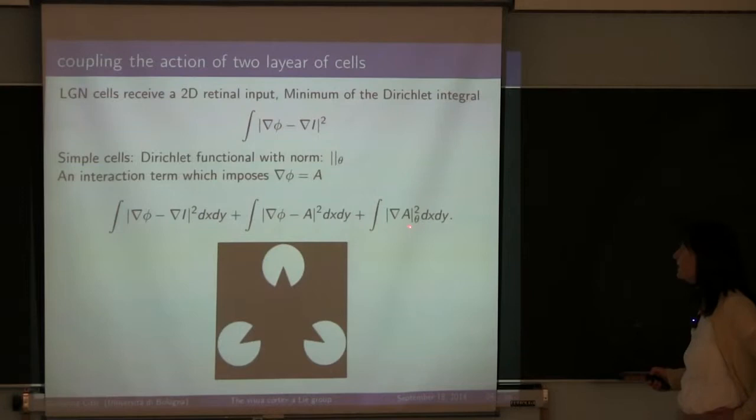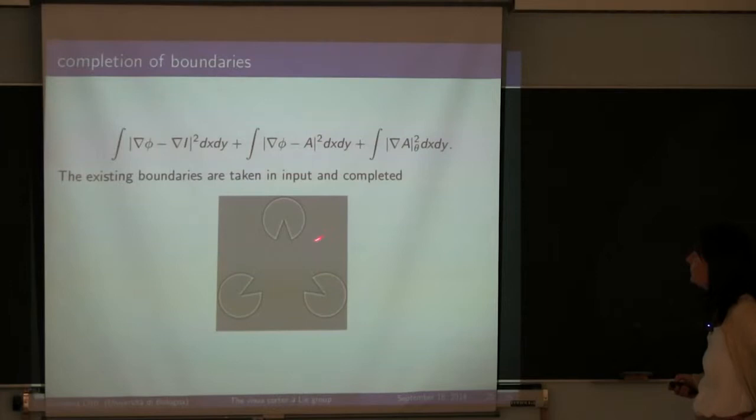Here we require that the vector field A is completed with respect to an angle theta, which is the direction of A. This part here is responsible for boundary completion. And this term tells us that we are studying the gradient of the function phi. When we start with an image, first we take the existing boundary from this part here, and then using this part of the equation which completes the boundaries.